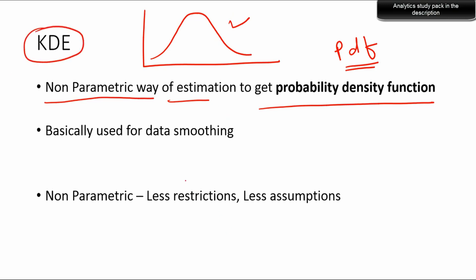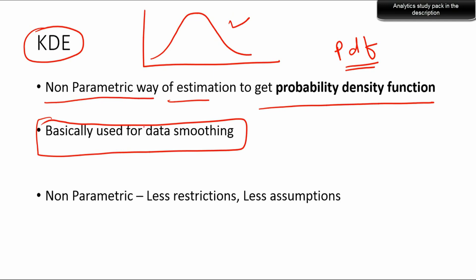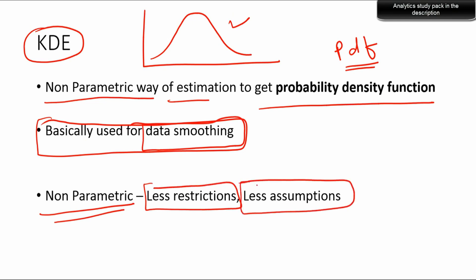This is not possible for many datasets, and that's where KDE is very useful. It gives a way to come up with the probability density function without estimating any parameters. This is useful in data smoothing. Being non-parametric, there are very few restrictions and assumptions, unlike parametric estimation — for example, linear regression has many assumptions: linearity, normally distributed error terms, and so on. Those assumptions are not present in non-parametric estimations.